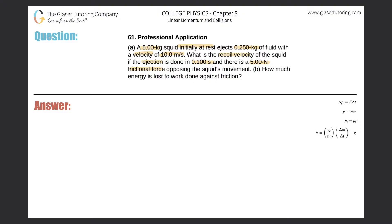First, I want to find the final velocity after the ejection occurs. Looking back at the problem, the value of 10 meters per second is the velocity at which the 0.25-kilogram fluid is ejected — that is the ejection velocity. So now, in order to find the final velocity of the squid after it ejects this fluid,